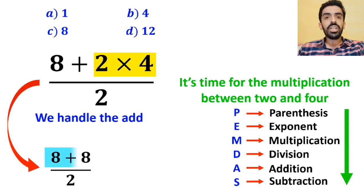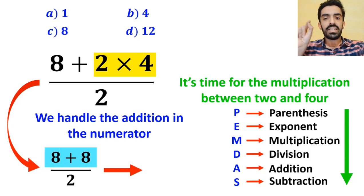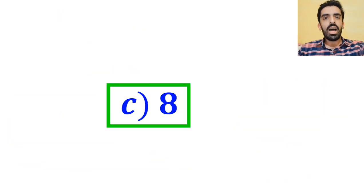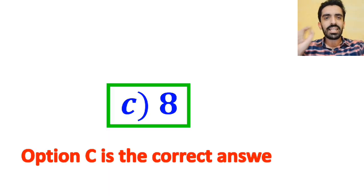Finally, we handle the addition in the numerator, simplifying this expression to 16 over 2, which ultimately gives us the answer 8. Therefore, option C is the correct answer to this question.